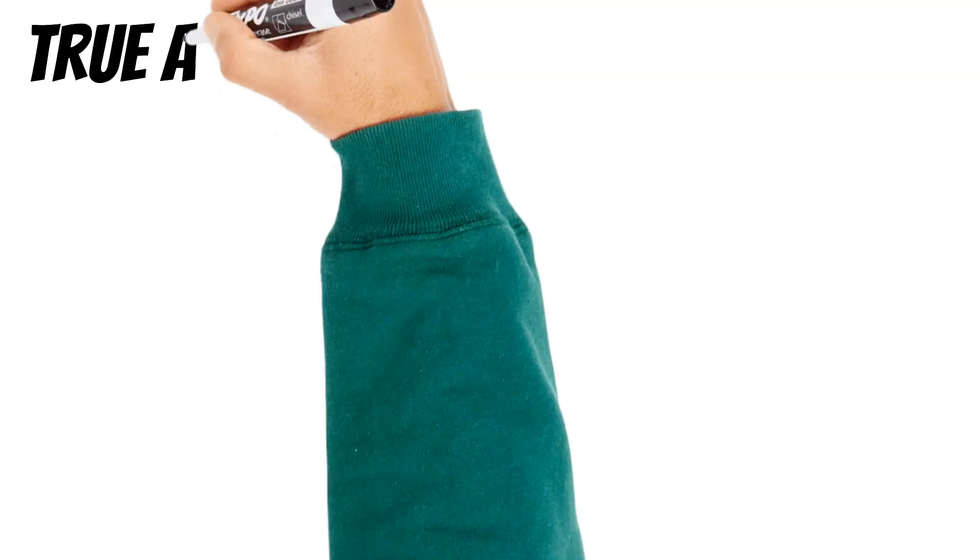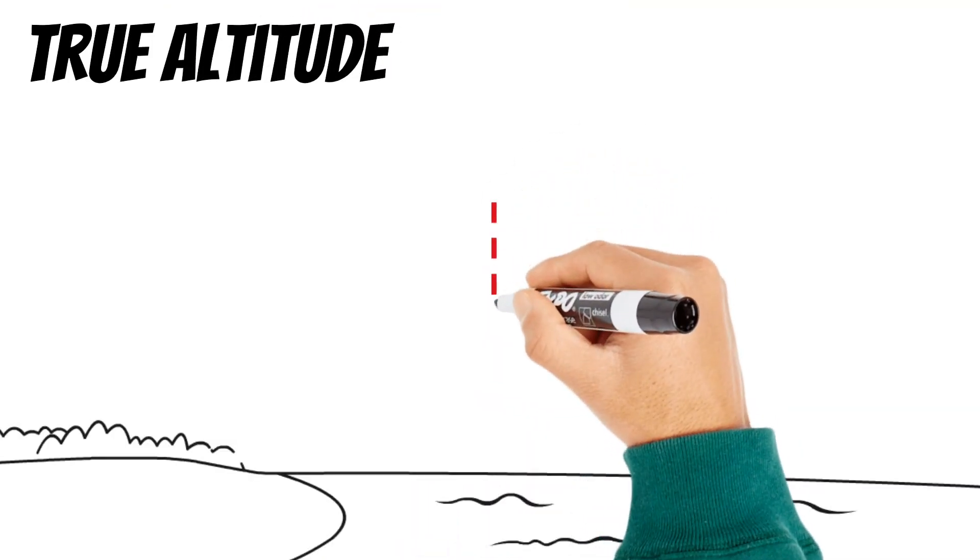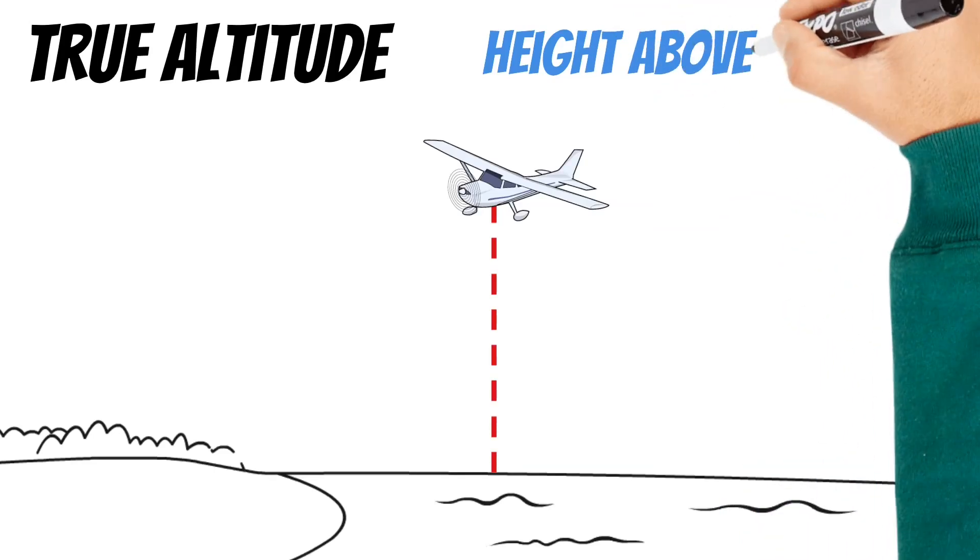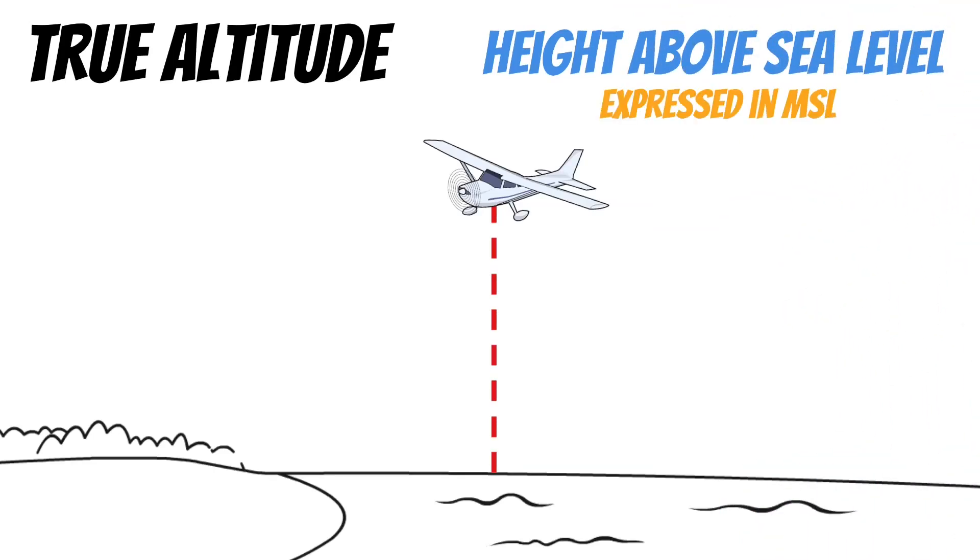Our real altitude is called true altitude, and this is our actual height above sea level. Now in a perfect world, we'd want our indicated altitude to match our true altitude. And while it's pretty rare to get them to match perfectly, we're going to talk about how to get them as close as possible here in just a minute.